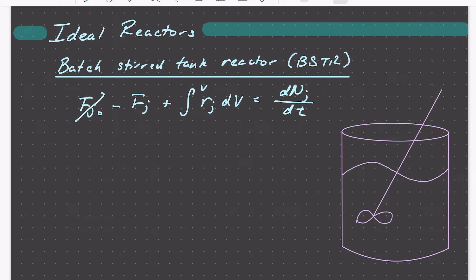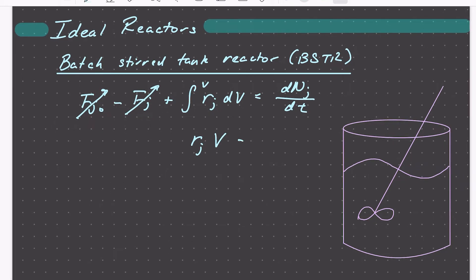For our batch reactor we have no flow of species in or out. And again, because it's stirred we take it to be spatially uniform or well mixed, and so therefore we can represent the generation of J by reaction as simply the product of the rate of formation of J times the reactor volume.